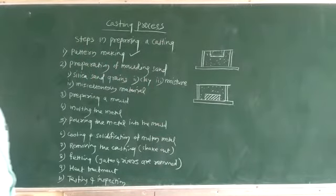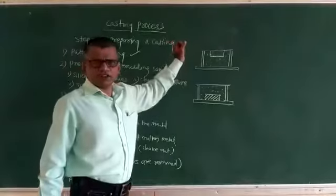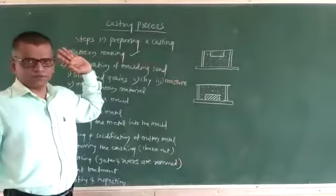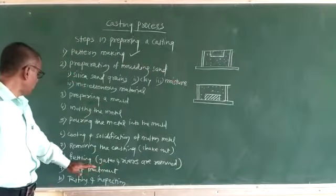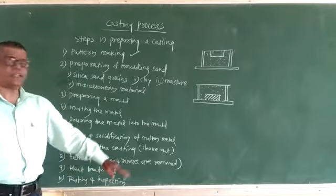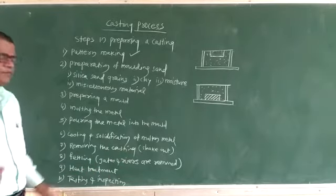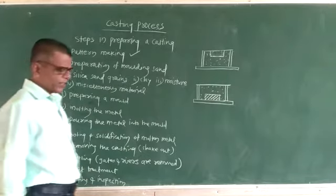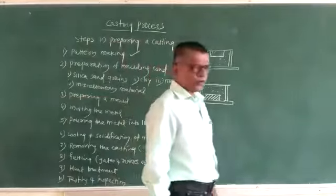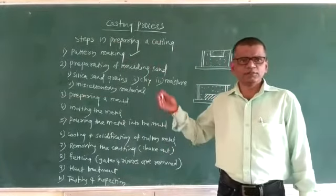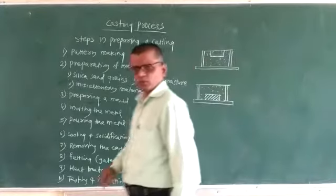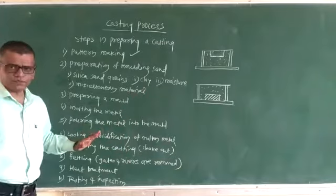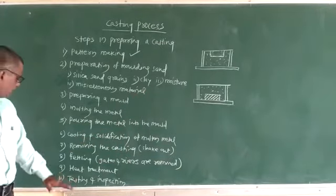When you remove the solidified casting from the molding sand, parts of risers, runners, and screws are attached with the solidified casting. Those risers and runners, if required, are cut off from the solidified casting. The next step is heat treatment. If certain properties or characteristics of the material are required, some heat treatment processes are carried out on that casting after the cleaning operation.